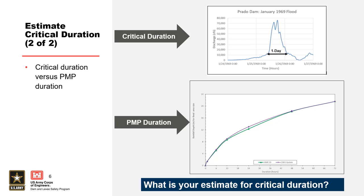A common mistake is to confuse the critical inflow duration with the PMP duration. While a typical PMP duration based on the current hydrometeorological reports is 72 hours, or three days, that does not mean that the critical inflow volume duration for the dam is also three days. As seen in this example for Prado Dam, the PMP duration is 72 hours; however, the critical inflow duration for Prado Dam is only one day. If the critical duration is less than one day, it can be rounded up to one day, because the minimum critical duration for an RMC RFA analysis is one day.